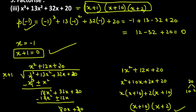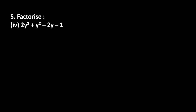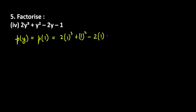Now let's do the fourth and last part: 2y cube plus y square minus 2y minus 1. Here I can see that even for positive values, the polynomial may become negative. Let's first try y = 1: 2 times 1 cube plus 1 square minus 2 times 1 minus 1. Let's simplify.